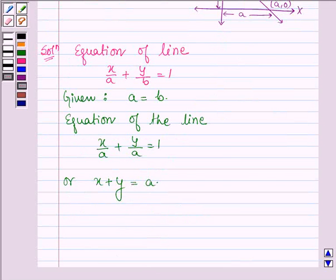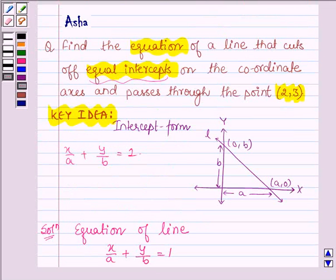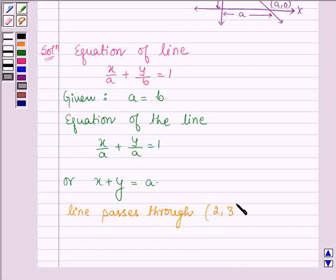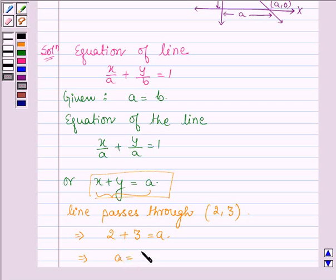Now we are given that the line passes through the point 2,3. Therefore this point must satisfy the equation of a line. So we have 2 plus 3 is equal to A, which implies A is equal to 5.